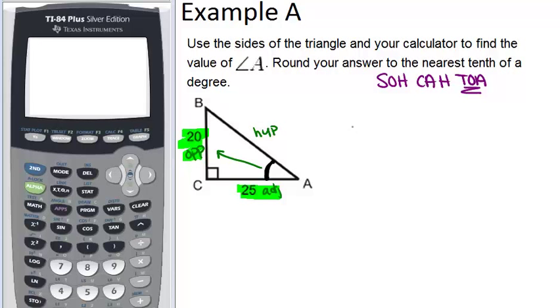So that means our equation is going to be tangent of angle A equals 20, which is opposite, over 25, which is adjacent. So since we're solving for an angle, that means we have to use inverse tangent. So angle A itself will actually equal inverse tangent of the ratio of 20 over 25.